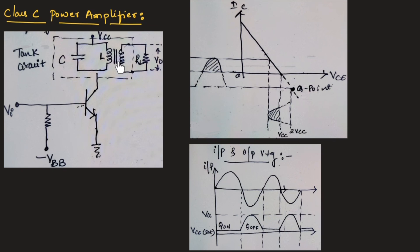This is the circuit of class C power amplifier, where at the collector side, a tuned circuit is connected with the combination of C and L. This is the tank circuit, where across the load resistor, we will be measuring the output voltage.